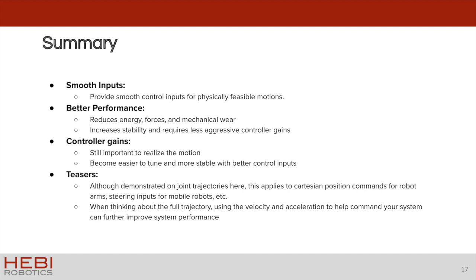Now, although we just demonstrated on the joint trajectories here, this does apply to Cartesian position commands for robot arms, steering inputs for mobile robots, etc. So really, anytime you're inputting something into a physical system, you can think of trying to smooth that out with trajectory implementation. This is something we do a lot when composing more complex robot systems.